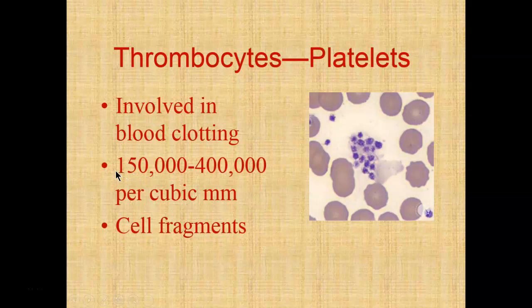If you have extremely low numbers of thrombocytes, it may be difficult for your blood to clot, and if your blood doesn't clot you'll lose more blood when injured — this is hemophilia, commonly called free bleeding. Conversely, if you have extremely high numbers of platelets, your blood can clot when it's not supposed to, leading to inappropriate large clots that block blood vessels or travel in the blood, potentially causing death if lodged in vessels near the lungs or brain. You do need to know these approximate numbers.